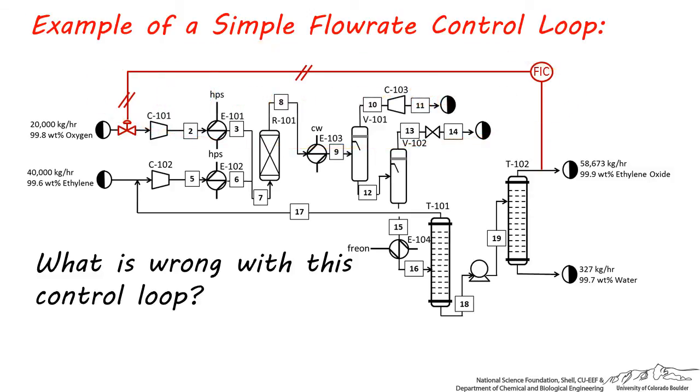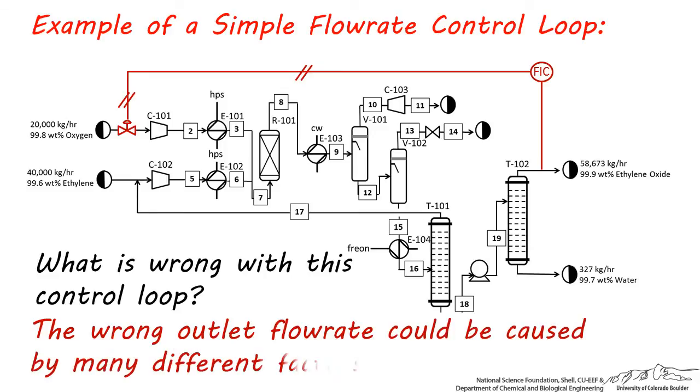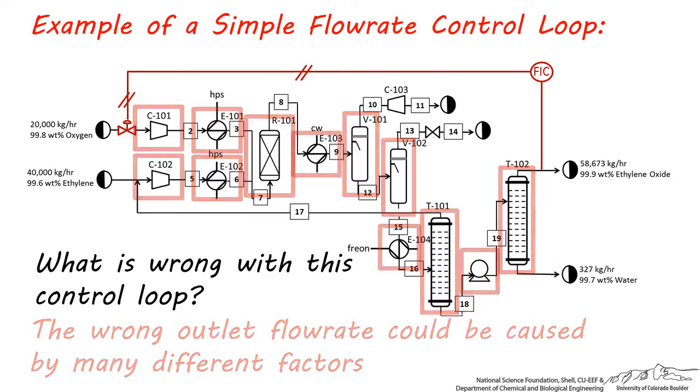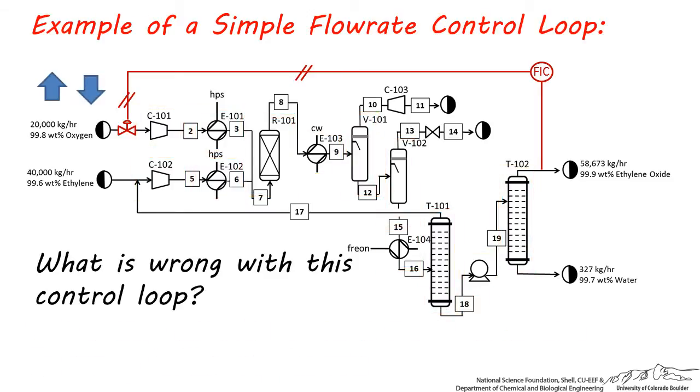Something else to keep in mind is that there could be many other problems that cause there to be a low or high flow rate at the exit. The reactor could be running at the wrong temperature. A heat exchanger could be encountering a problem and not heating or cooling a stream properly. Essentially, it could be caused by a problem occurring in any one of these 12 pieces of equipment, and increasing or decreasing the flow rate here or here will not help.